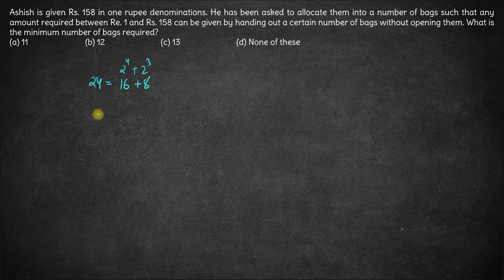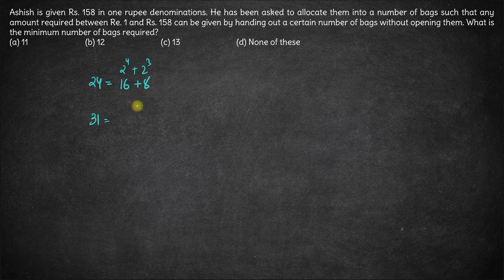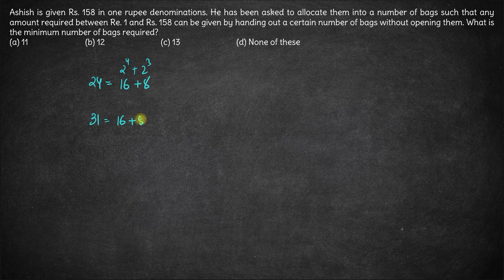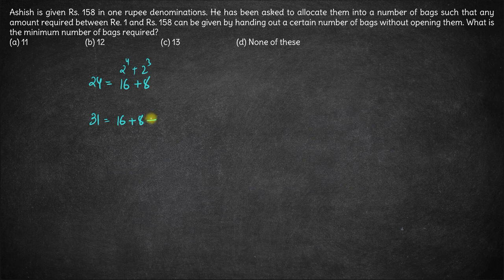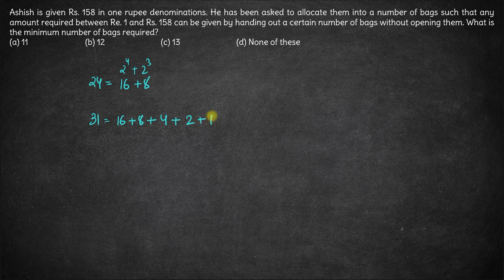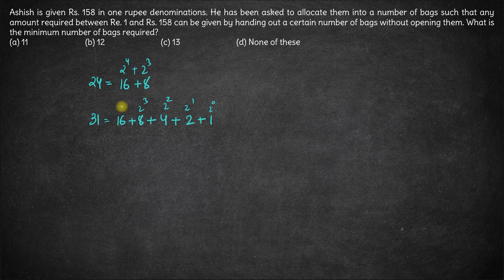Take any other number, let's take 31. 31 can also be written as sum of powers of 2. 31 can be written as 16 plus 8 is 24, plus 4 is 28, plus 2 is 30, plus 1. Now 1 is 2 to the power 0, this is 2 to the power 1, 2 square, 2 cube and 2 to the power 4. So 31 can be written as sum of powers of 2.